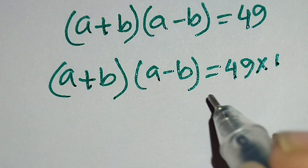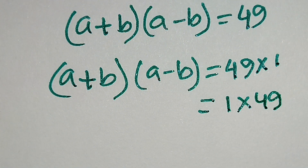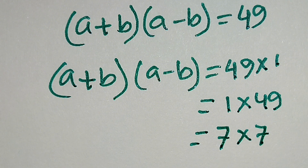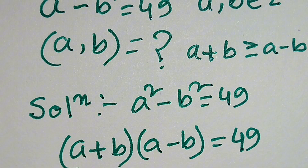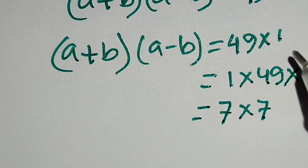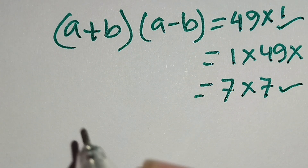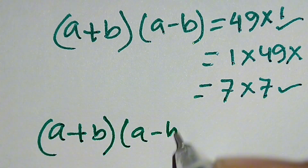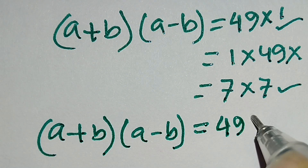We can also write it as 1 times 49, and 7 times 7. Since a plus b is greater than or equal to a minus b, the factor pair 1 times 49 is not possible. Only 49 times 1 and 7 times 7 are possible. So in the first case, a plus b times a minus b equals 49 times 1.